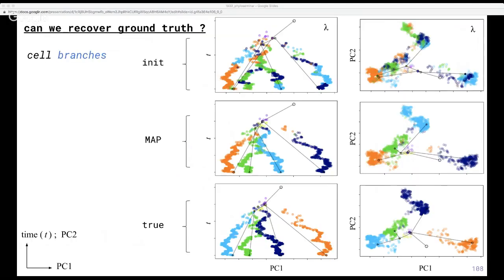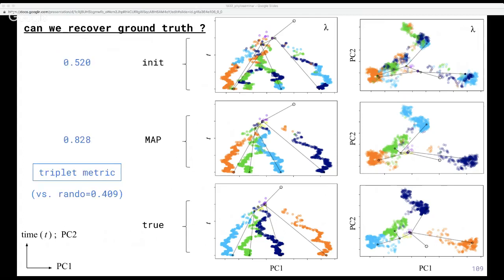We compute the triplet metric against the ground truth tree we used to simulate the data. Zero represents zero percent agreement with the true cell topologies and one represents perfect agreement. As a baseline, the random tree scores 0.4 — pretty close to zero percent agreement. Our initialization procedure improves on the score, and the MAP tree we recover after inference brings our agreement with ground truth topologies to over 0.8, showing equilibration towards the true cell topologies.